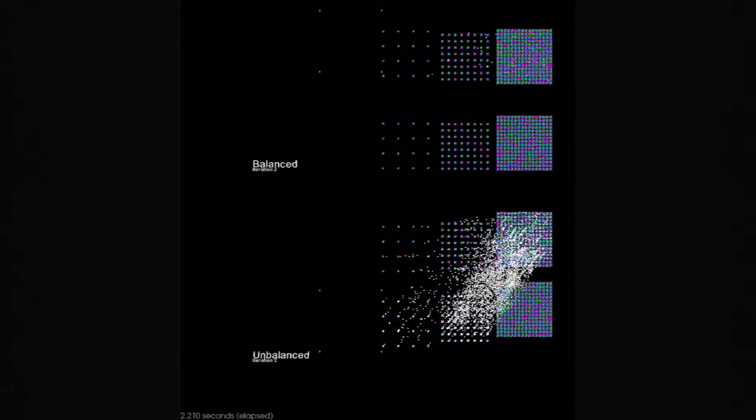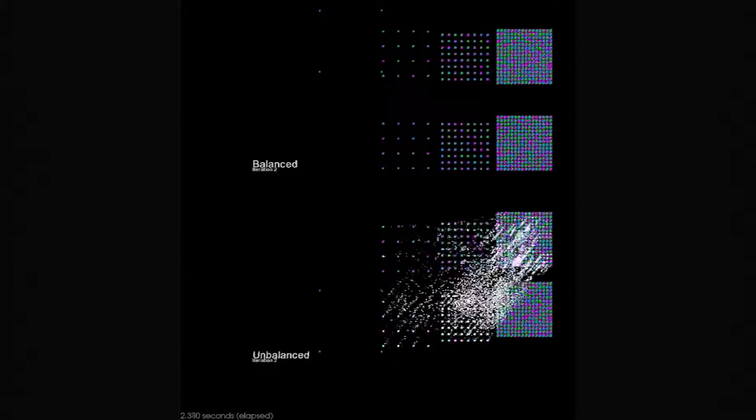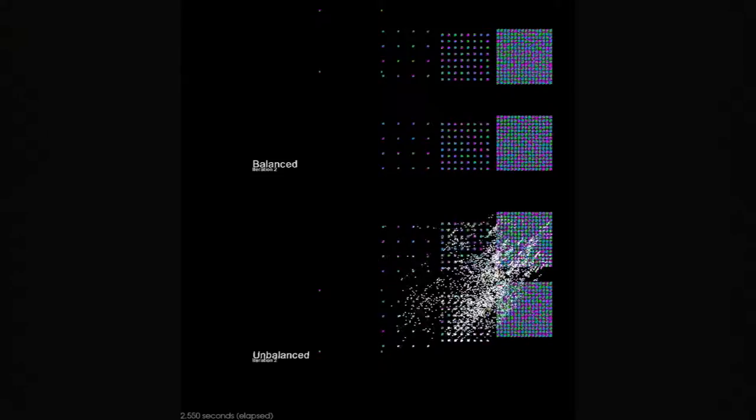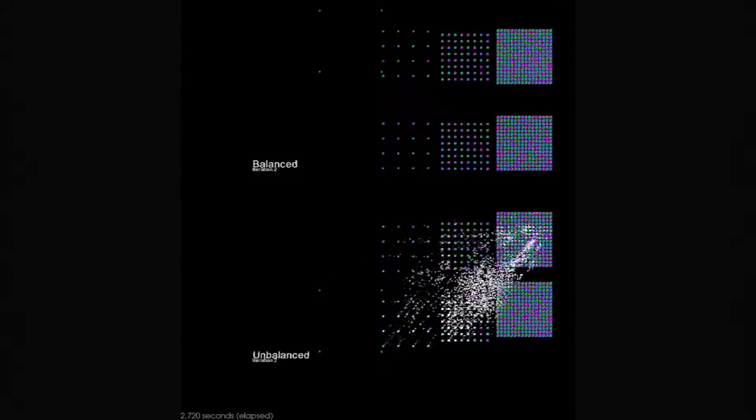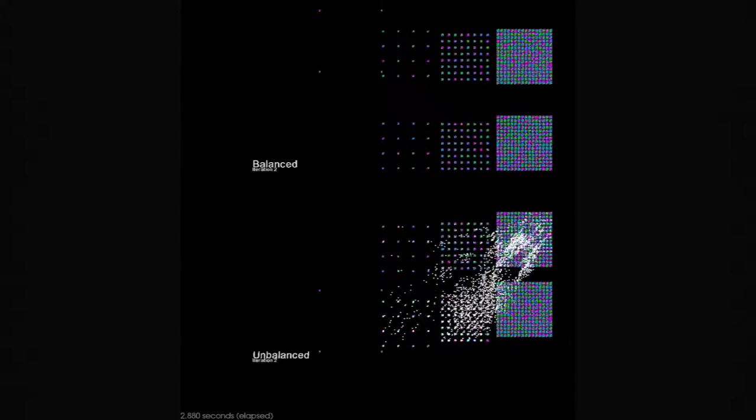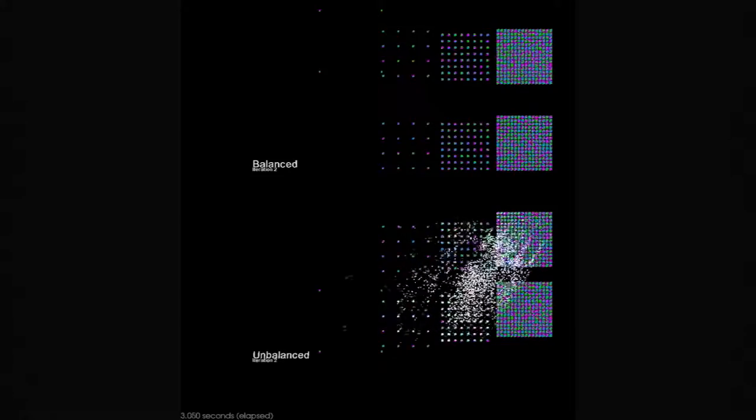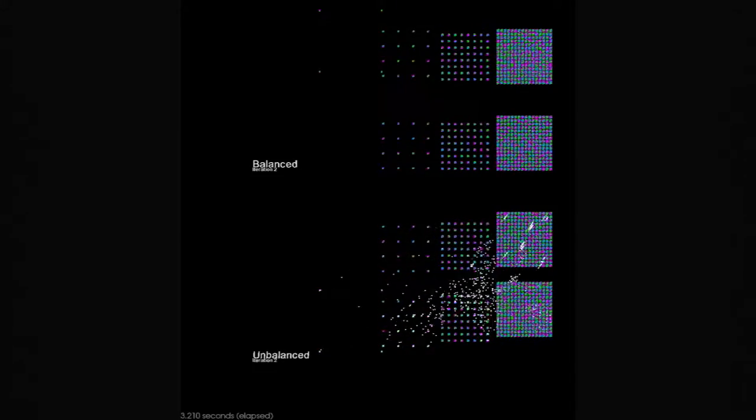In conventional FMM, multipole to local conversion occurs within the same partition level. However, in the FMM shown here, a mathematical technique called merge and shift is implemented, which reduces the number of such operations. As a result, the flow is shifted one level up on the target side.